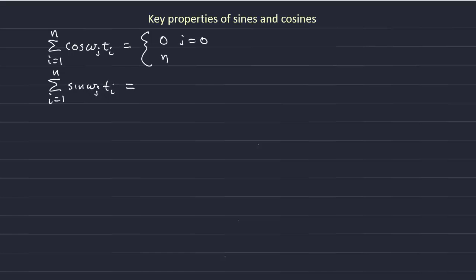So the sum of sine omega j t i over the whole record is 0 all the time.